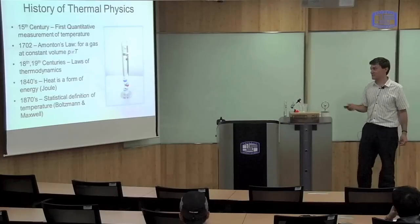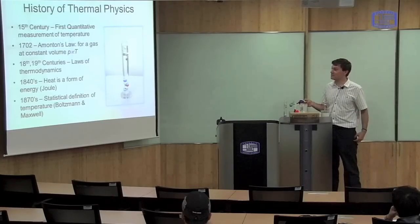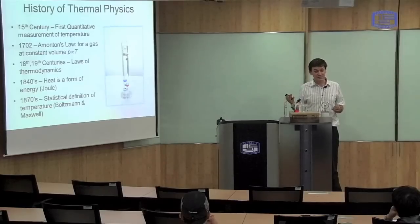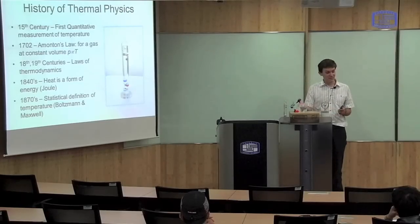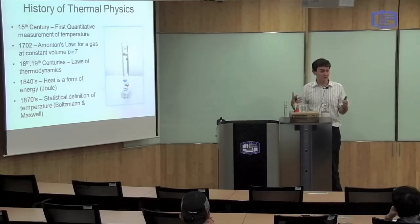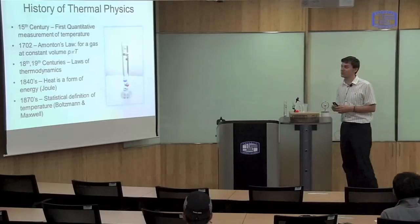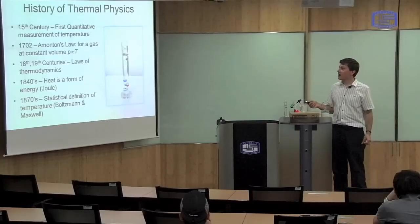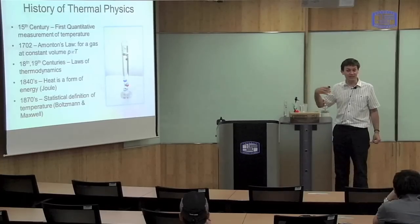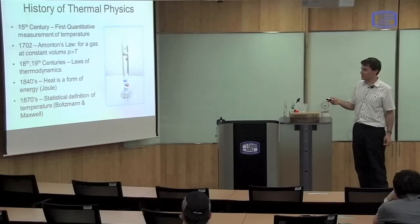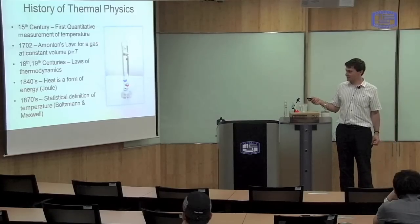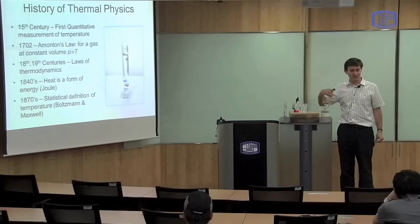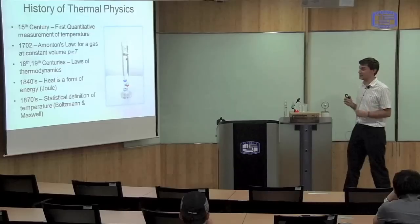Why do you want to measure temperature? You want to measure temperature because the temperature of a system affects its properties. If I have water at 20 degrees and water at minus 20 degrees, those systems are very different — one is ice and one is liquid. The earliest examples which were discovered were for the properties of gases, because gases behave quite simply as you change their temperature. There's Amonton's Law, which says that if you have a gas at constant volume, its pressure is proportional to its temperature — so the hotter the gas gets, the more pressure it exerts.